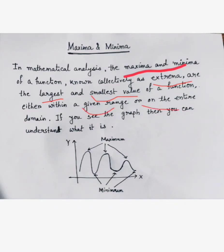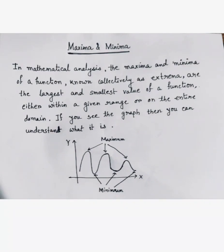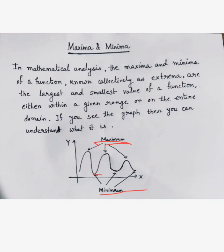Maxima and minima are the extrema of a function, either within a given range or in the entire domain. If you see the graph of y = f(x), you can understand what it is. The maximum corresponds to the largest value and the minimum is the smallest value of a function. In higher study you will also learn about global maxima, global minima, local maxima, and local minima, but for class 12 it is enough to know what is maxima and what is minima.